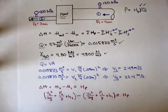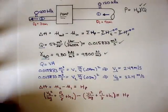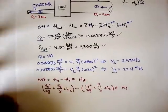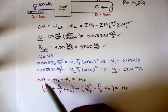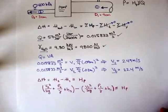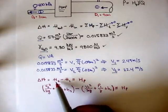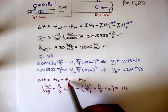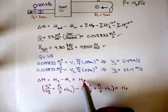Alright, welcome back. We were just about to finish this problem. We got up to the point where we said the change in total head is total energy head of 2 minus total energy head of 1, and that's equal to our pump head.